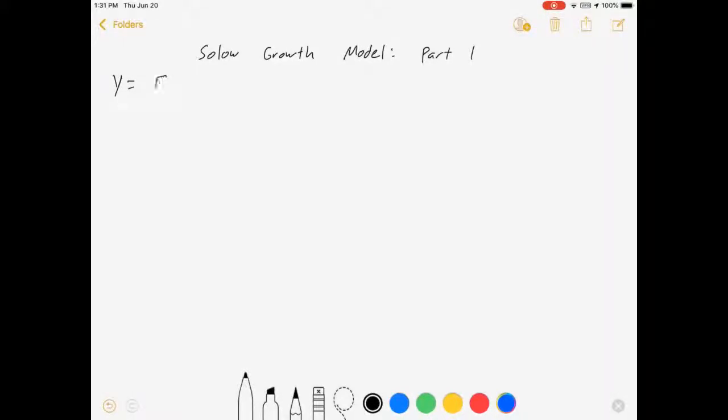Aggregate production Y is equal to F of K, capital, and L for labor. Standard production function, I'm going to assume here that it's constant returns to scale.